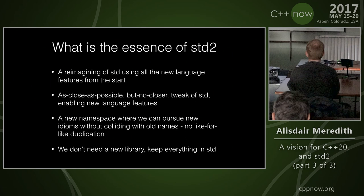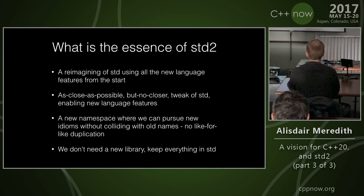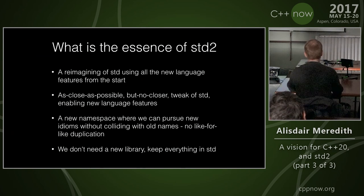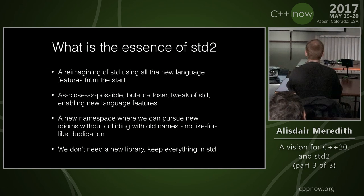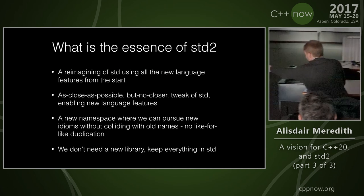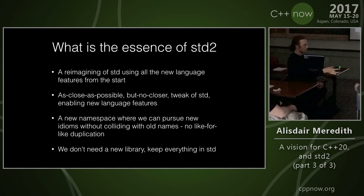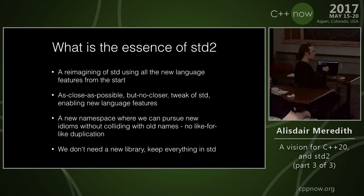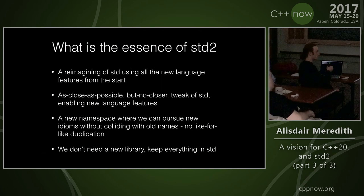The new language features fundamentally change so many things that they make trying to support the current std interface and grow it too constraining. Especially const expr, noexcept — std doesn't properly deal with rvalues in all cases. And more things are coming: structured bindings, concepts. These are fundamental changes to the way we write interfaces, not to mention optional and variant vocabulary types. Which I guess means the option I've missed is: do option two, but do it in std — accept some breakage in std.